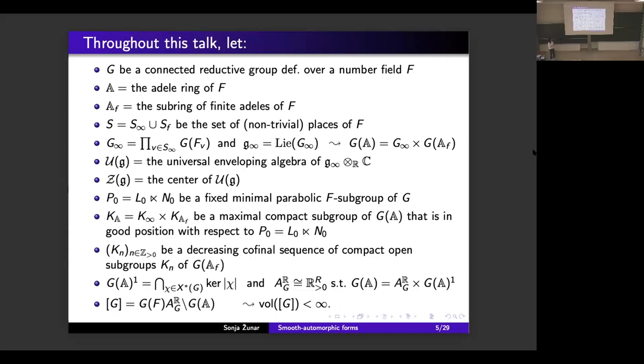We will also need a fixed decreasing cofinal sequence of compact open subgroups K_n of G(A_F). Finally, let us define the subgroup G(A)^1 of G(A) by this formula where chi goes over the group of F-rational characters of G. And let us define in a standard way the Lie group A, which is a subgroup of G_infinity, such that G(A) decomposes into a direct product of A and G(A)^1. I will denote by [G] the quotient of G(A) by G(F)·A_G. Recall that this quotient is of finite volume.